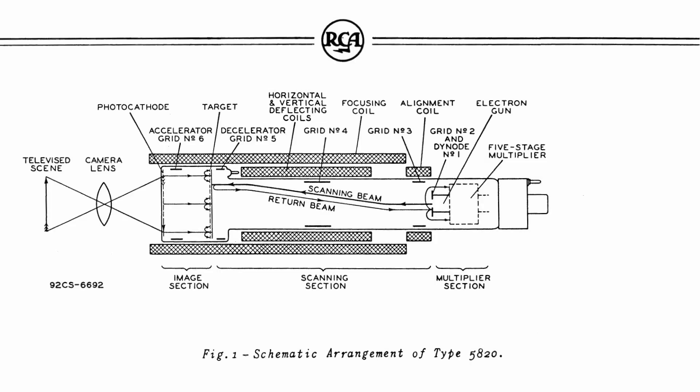The electrons turned back at the target form the return beam, which has been amplitude modulated by absorption of electrons at the target in accord with the charge pattern whose more positive areas correspond to the highlights of the televised scene.